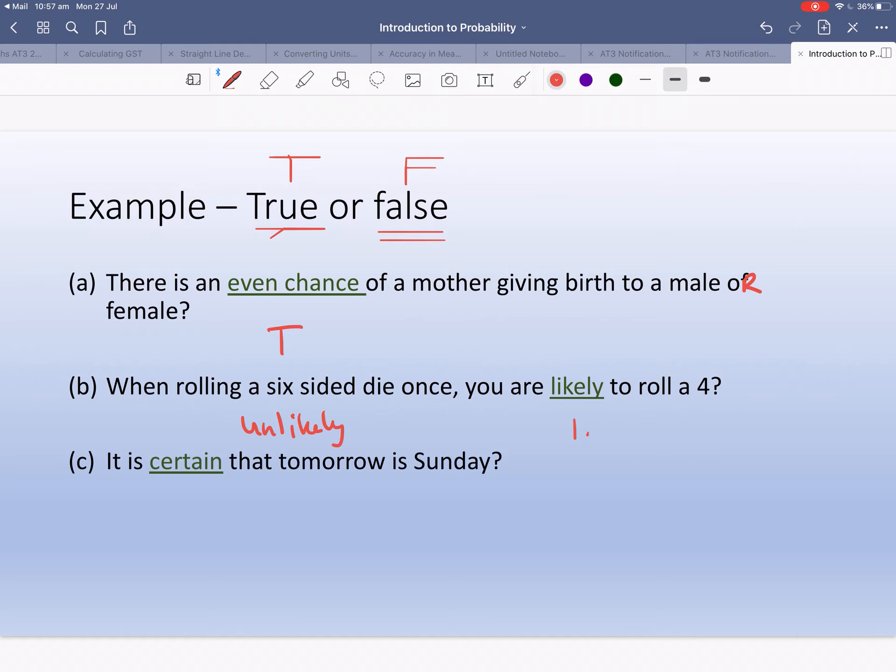So it's unlikely that you roll a four. It's probably more likely that you roll the others because there's more possibilities.